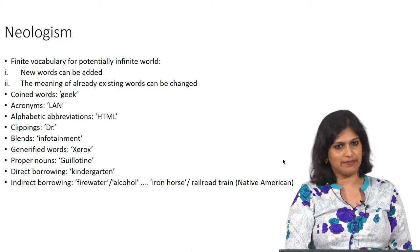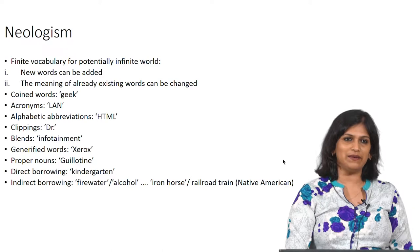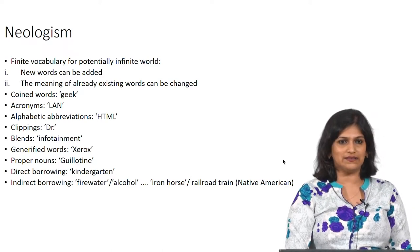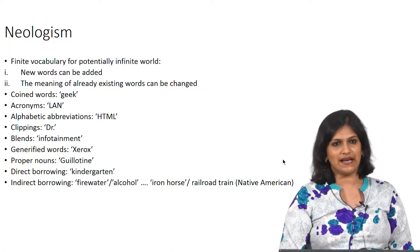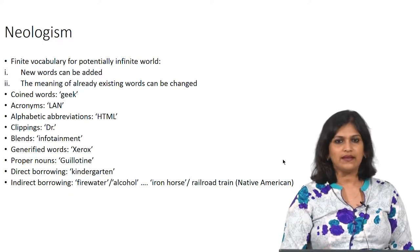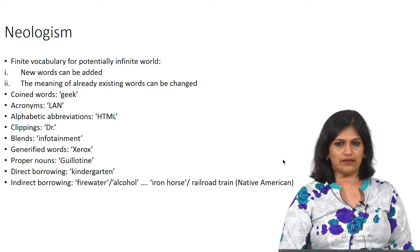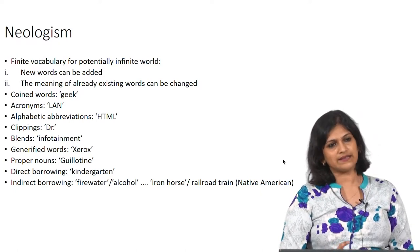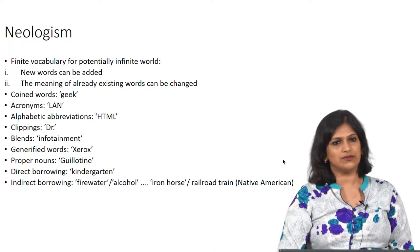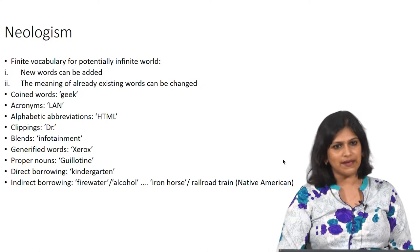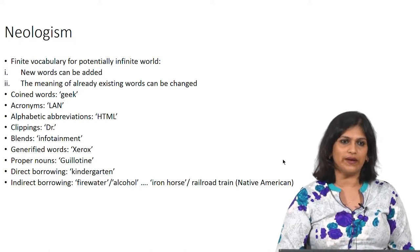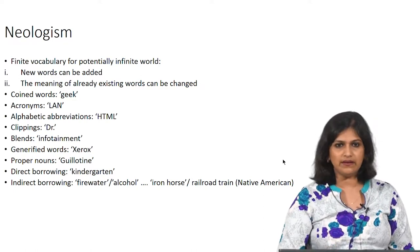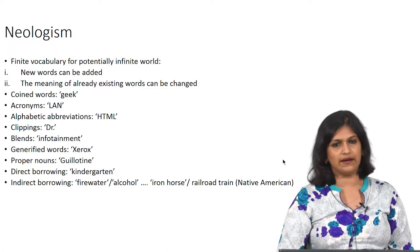Infotainment is a word which has content that is both information and entertainment. The part 'info' comes from 'information' and 'tainment' from 'entertainment.' Keeping information plus entertainment together, we get the blended word 'infotainment.' This is also a new way by which we can add new words to the English lexicon, or for that matter, to any given language.